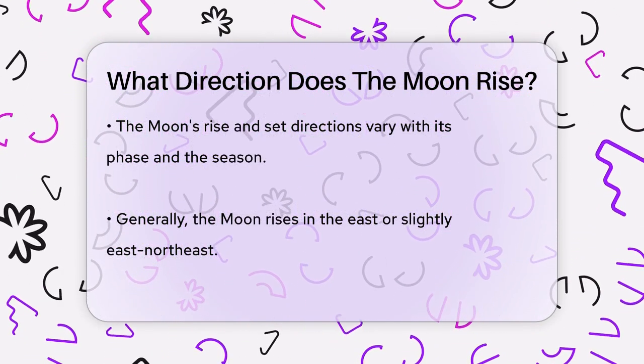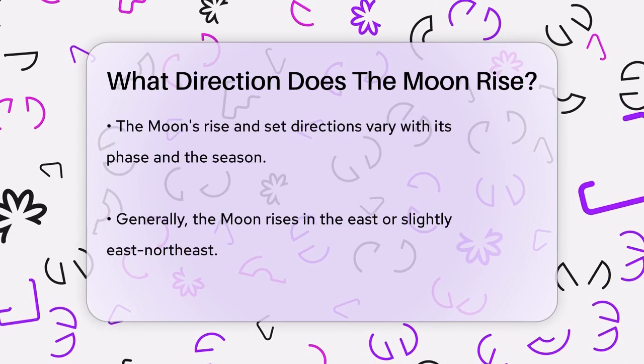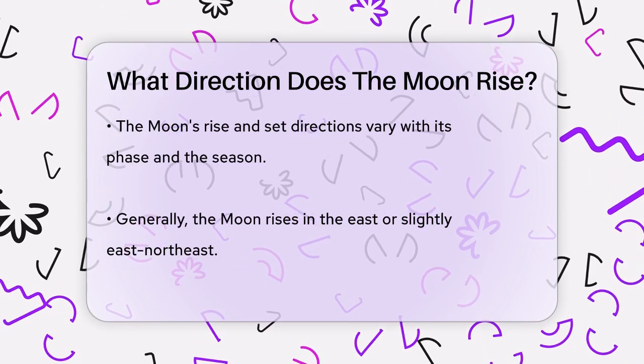This variation is due to the Moon's monthly orbit around the Earth, which causes its path across the sky to shift slightly each day.